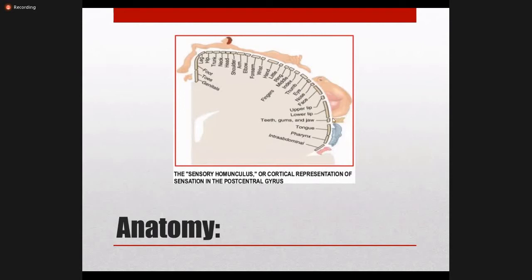The sensory cortex has a disproportionate representation — the foot, fingers, and hand occupy a very large area because they carry fine, precise sensations requiring greater cortical representation. In contrast, the face and trunk together are covered by a much smaller area. Two-thirds of the sensory cortex is devoted to the hand and foot for fine sensory discrimination.